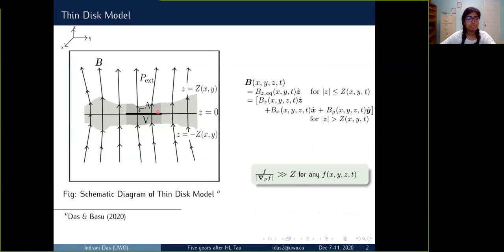This is a cartoon of our thin disk model. We have considered partially ionized isothermal self-gravitating magnetic planar sheets which have infinite extended x and y and it has a local vertical half thickness z. This is the external pressure and the magnetic field is taken to have this mathematical form. I am not going into the details here.